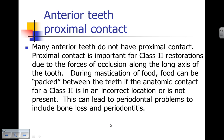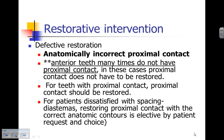Keep in mind that many anterior teeth don't have proximal contact. Proximal contact is important for the Class 2 restoration due to occlusal forces along the long axis of the tooth, and during mastication food can be packed between teeth if contact is incorrect or absent, leading to periodontal problems including bone loss and periodontitis. One study demonstrated that anterior teeth only have proximal contact approximately 63% of the time — 37% of the time anterior teeth are not in contact at all.